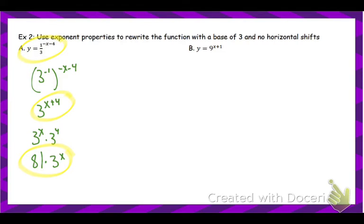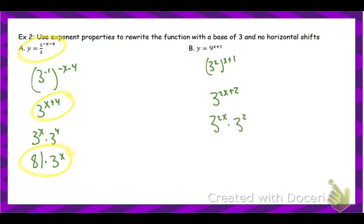Let's try another one. I want to rewrite this as a base of three. So nine is the same thing as three squared. Power to a power — you can multiply those exponents. Then using my exponent rules, same bases, you add the exponents. So this would be three to the two x times three squared, which gives nine times three to the two x. So this, this, and this would all create the same graph.